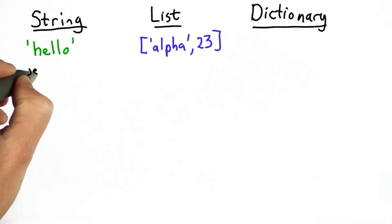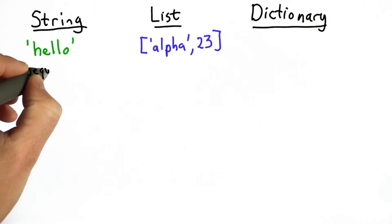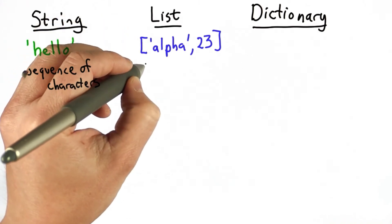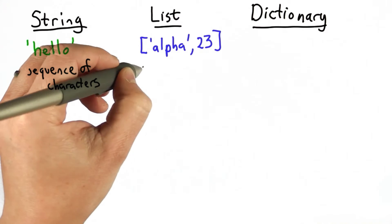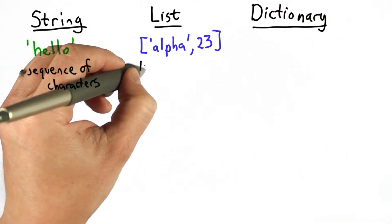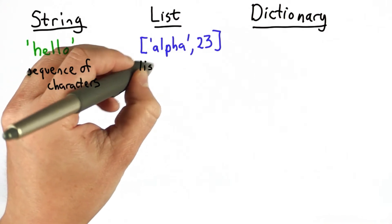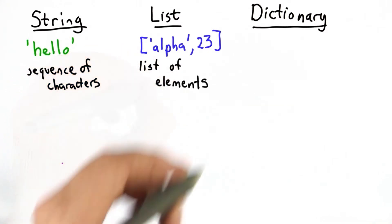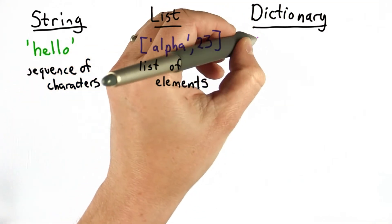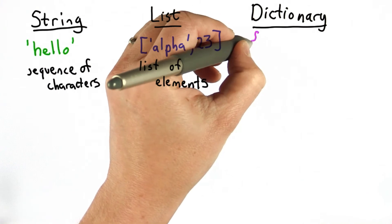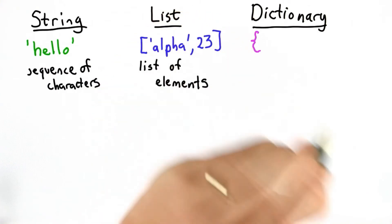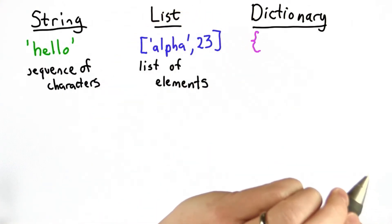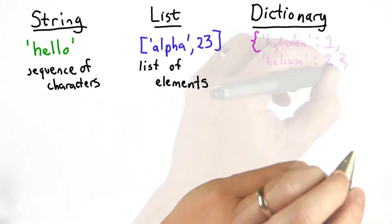So our string was a sequence of characters. Our list was a list of any kind of value — a list of elements of any value. The dictionary type, we're going to create using the curly bracket.